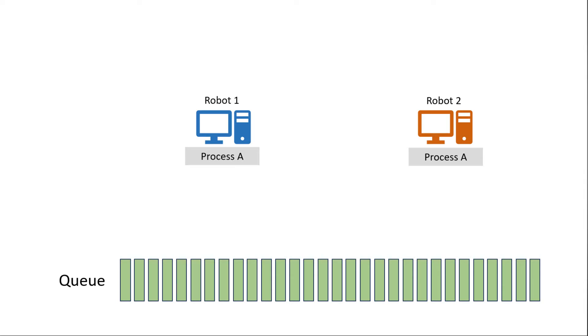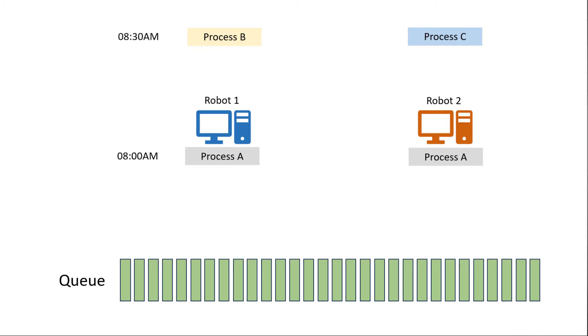But I want to show you one more thing. What if we have two robots each capable of running process A with one queue, and they can process those items in about 45 minutes? That's great. But the process that feeds the queue is set to run at about eight in the morning and takes about 45 minutes to finish. We also have process B and process C which we want to be processed by robot one and robot two respectively at about 8:30. That's going to be a problem because at 8:30 robot one and robot two are going to be busy processing the queue items, and processes B and C are more time critical than process A.